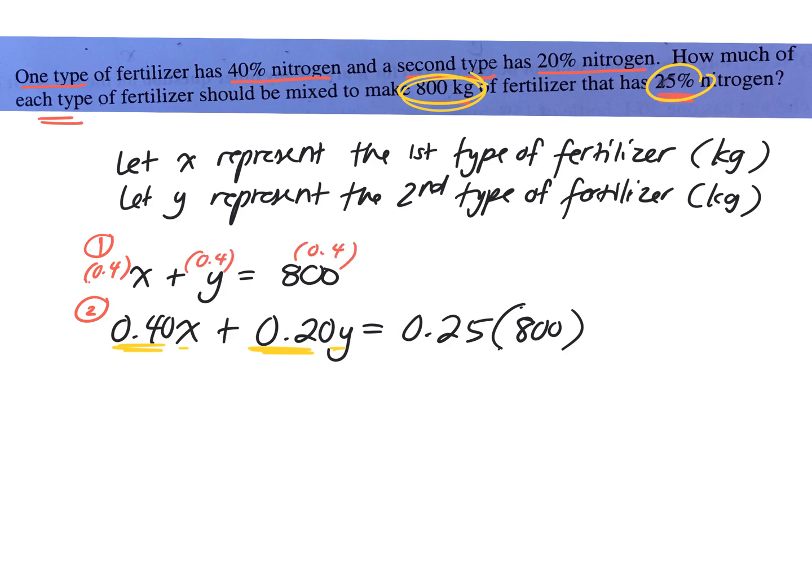So I want you to rewrite the first equation. So it would be 0.4x + 0.40y equals, what's 800 times 0.4? Good, equals 320. And for the second equation we leave it as is, right? So we have 0.40x + 0.20y equals, let's simplify this, what's 800 times 0.25? Excellent. Okay, so 200.